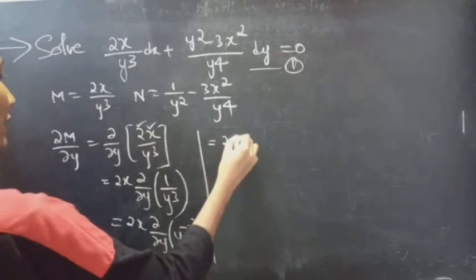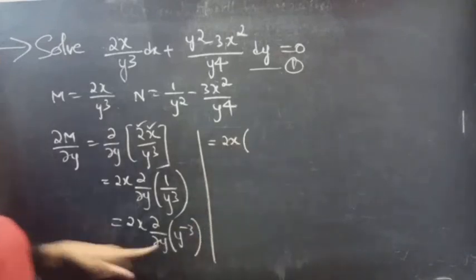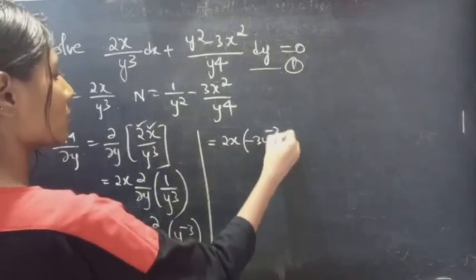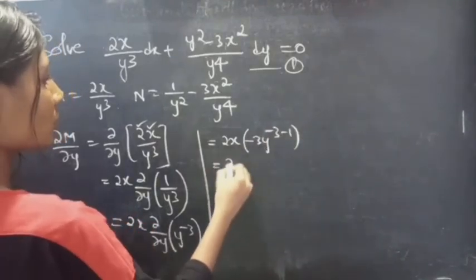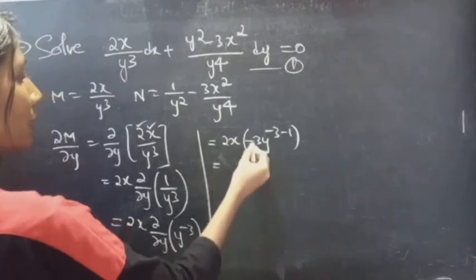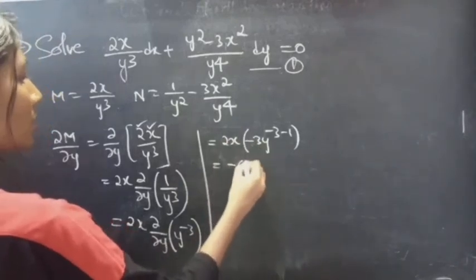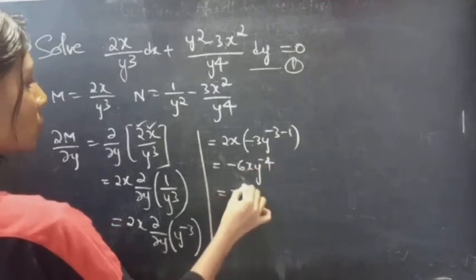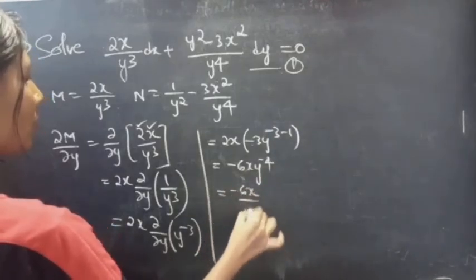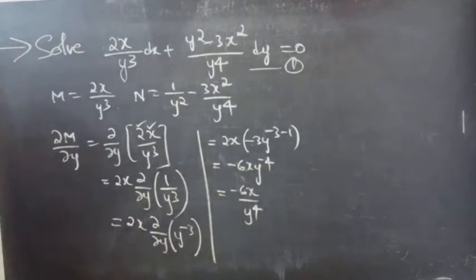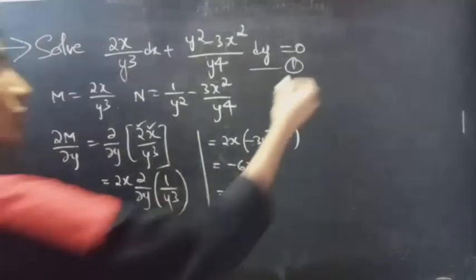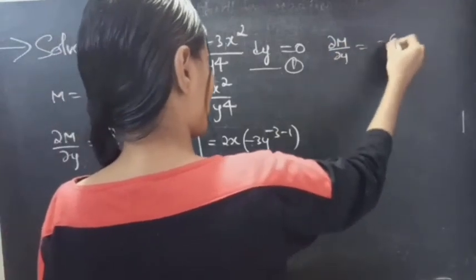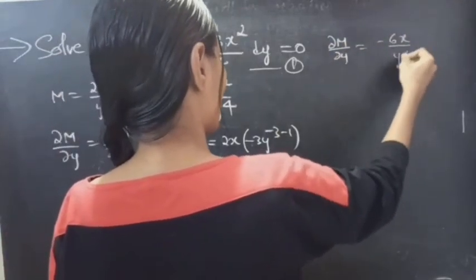This equals 2x times the derivative of y⁻³ with respect to y, which is −3y⁻⁴. So 2x · (−3) · y⁻⁴ = −6x · y⁻⁴ = −6x / y⁴. Therefore ∂M/∂y = −6x / y⁴.